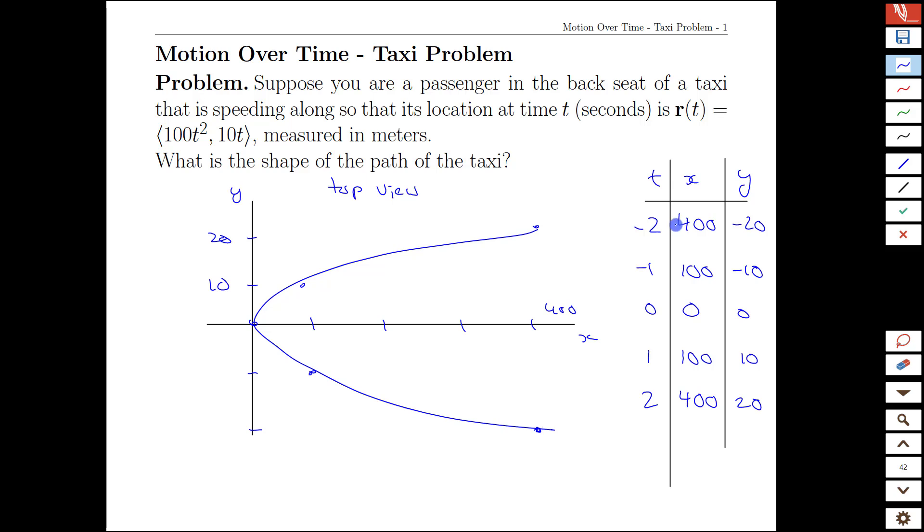From the sequence of time values, this is time negative 2 here, so we'd be moving up the curve and around like so. That defines the path of the taxi. So we start here, we're driving, and we're turning the entire time.